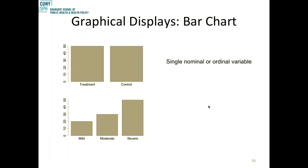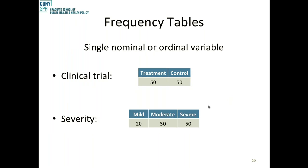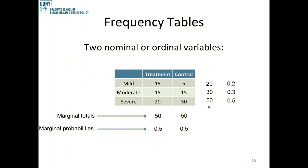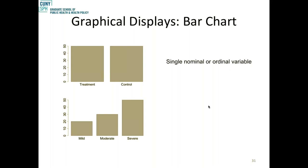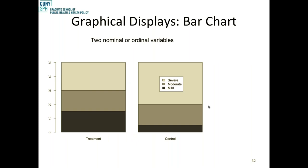We also often display data in bar charts. Just as we had that table with treatment and control groups and mild, moderate, and severe categories, we can display that graphically. Sometimes it's even easier to see in a graph. We can also use a stacked bar chart to see that the proportion of people in the treatment group with severe symptoms is lower than in the control group — visible at a glance.